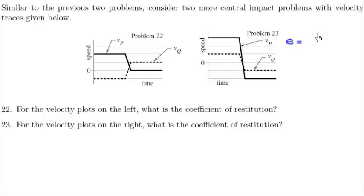So I got e. It's a rate of separation divided by rate of approach. So the rate of separation is vq2 minus vp2 divided by vp1 minus vq1. This is the exact same thing I had before.